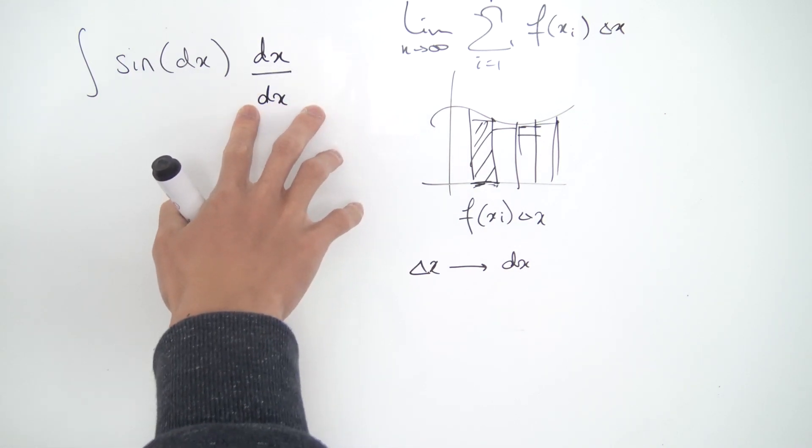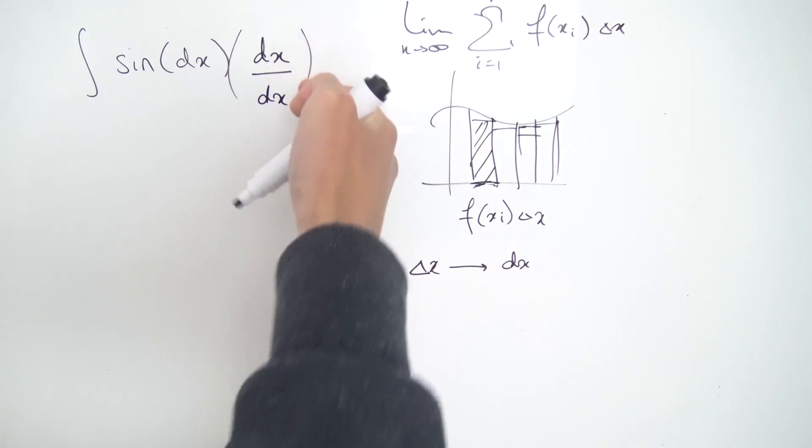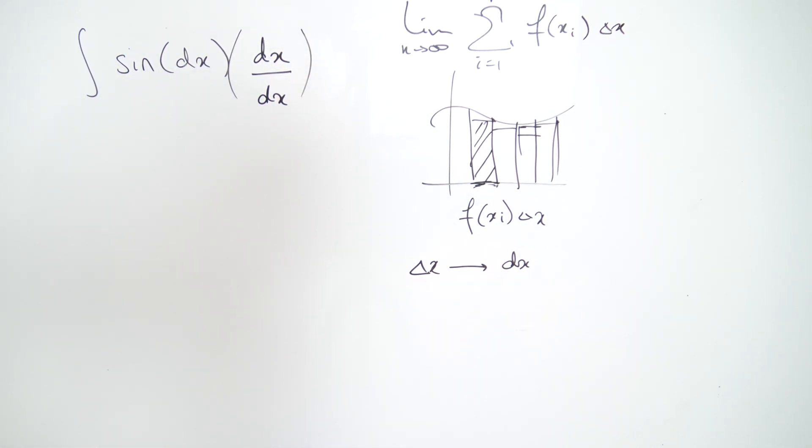So this is essentially multiplying by one. And why can we do this? dx over dx—well, remember dx is the limit. So if you take the limit as delta x over delta x approaches zero, this is just one. The limit does indeed exist and we can treat this as kind of like a fraction.